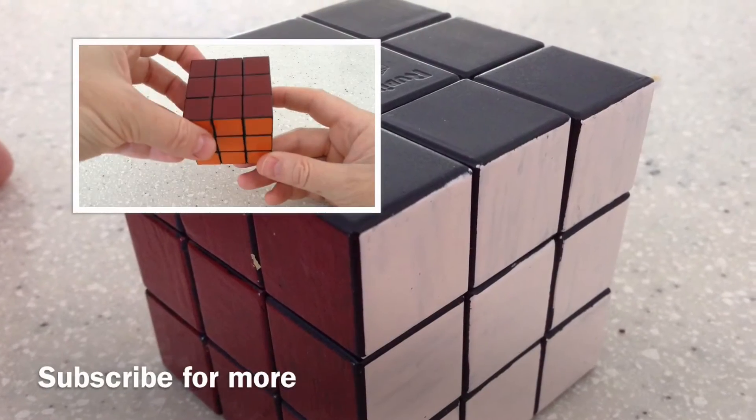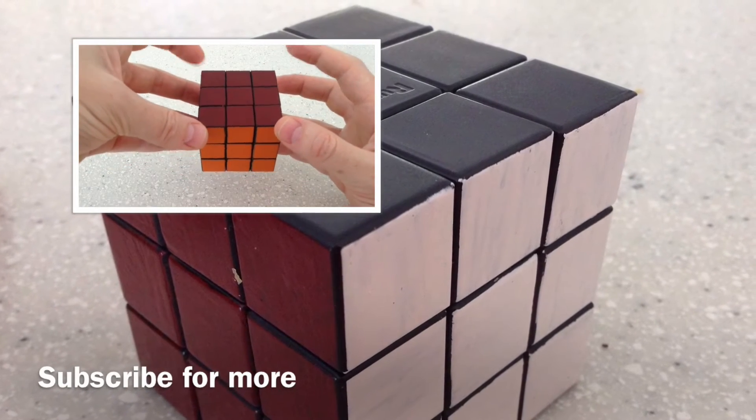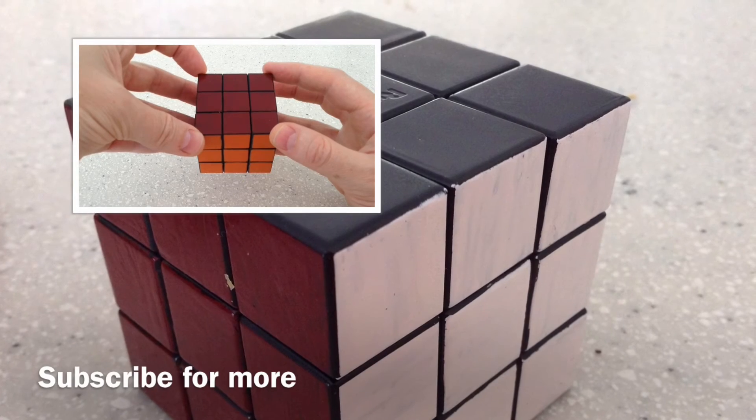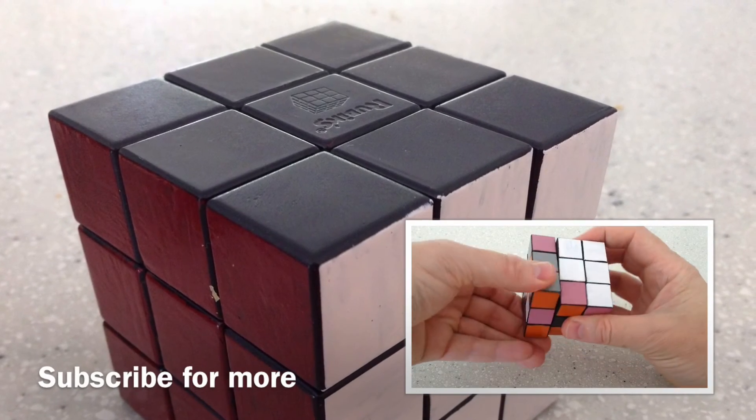This first part is going to look at how to get the four corners on the top layer only. Move the white and pink one in.